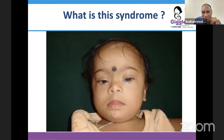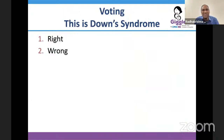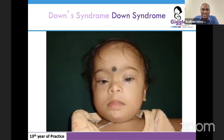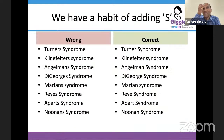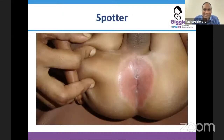A child presents with mongoloid slant, depressed nasal bridge, delayed milestones, likes music, small head, and relatively large tongue. Is this Down syndrome? The answer is it is not 'Down's syndrome' — the correct term is Down syndrome, without the possessive apostrophe. For 13 years I used to write 'Down's syndrome' until a student corrected me. We have a habit of adding 's' — Turner's syndrome, Klinefelter's syndrome — but the correct modern eponym is Down syndrome, Noonan syndrome, not 'Down's' or 'Noonan's.'